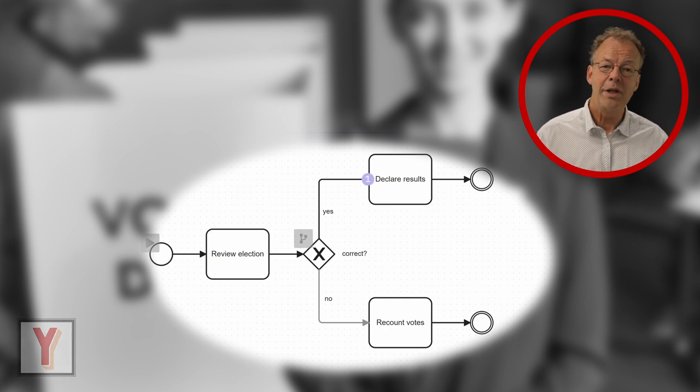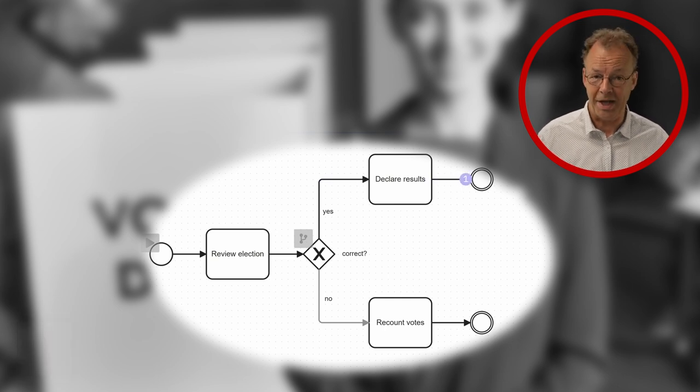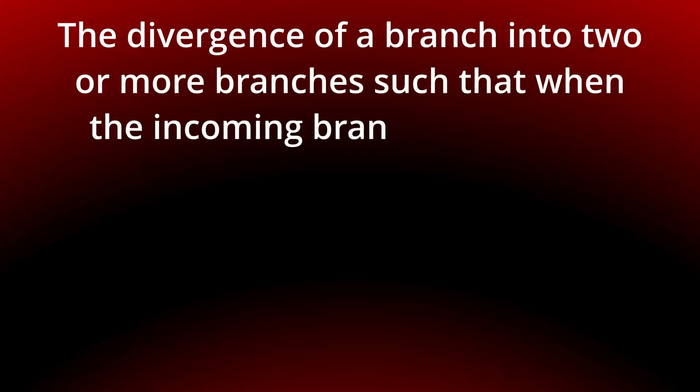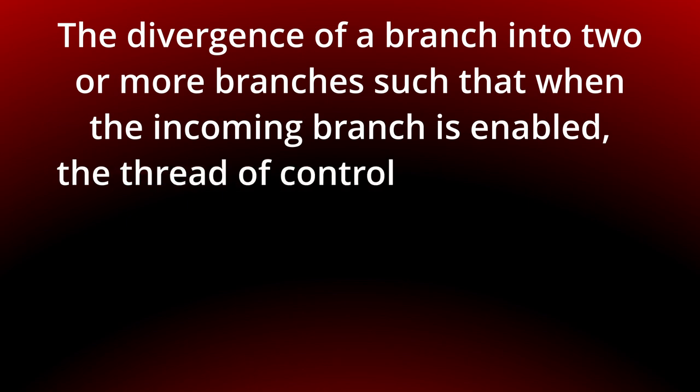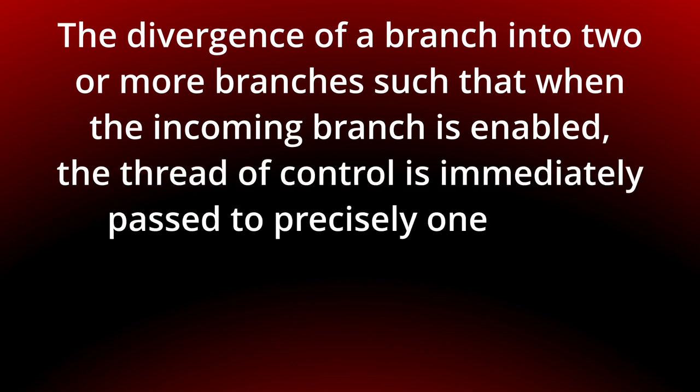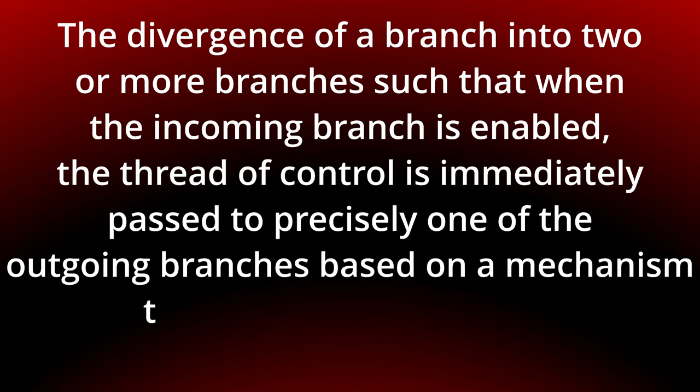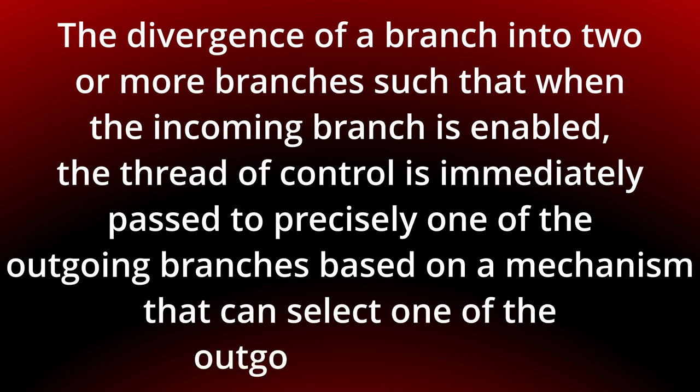Today we look at the exclusive choice pattern. The divergence of a branch into two or more branches, such that when the incoming branch is enabled, the thread of control is immediately passed to precisely one of the outgoing branches, based on a mechanism that can select one of the outgoing branches.